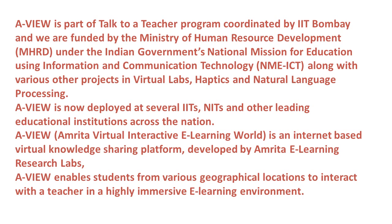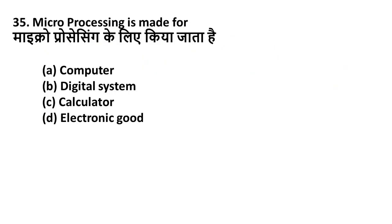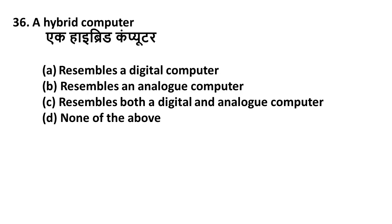Question 35: Microprocessor is made for — Option A: Computer, Option B: Digital system, Option C: Calculator, Option D: Electronic goods. Microprocessor is used in computers. Option A is the correct answer.